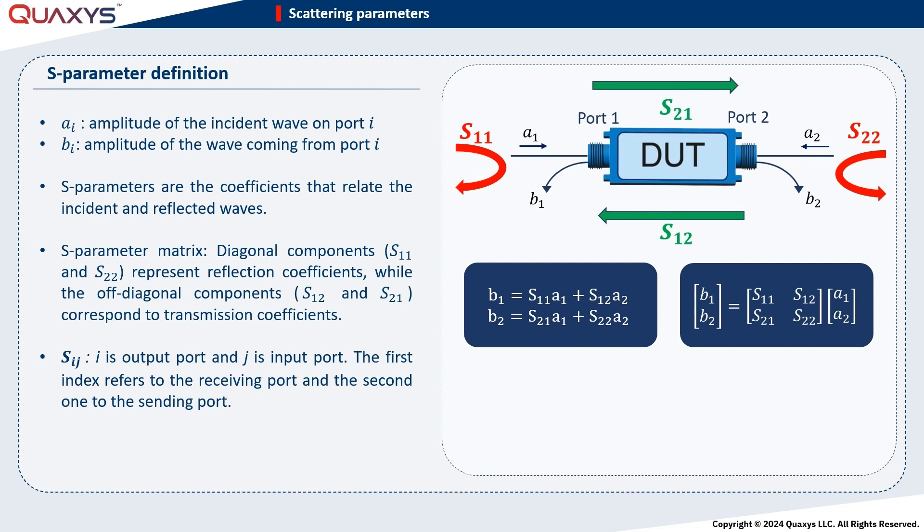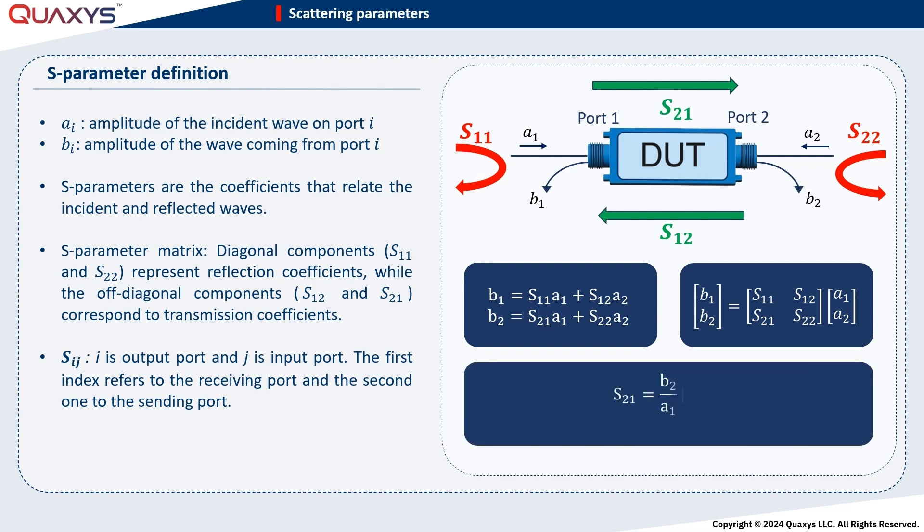Now, let's delve into the calculation of S-parameters. Specifically, let's focus on S-2-1. According to the equation for B-2, S-2-1 is the ratio of B-2 to A-1, assuming A-2 is 0. When A-2 equals 0, it implies that port 2 has no excitation and no reflection. This means that port 2 is terminated in its characteristic impedance, which is usually 50 ohms. An essential consideration during the measurement of S-parameters for each port is to terminate all other ports with their characteristic impedances. This step is taken to prevent any reflections from other ports to only take into account the reflection from the measured port.